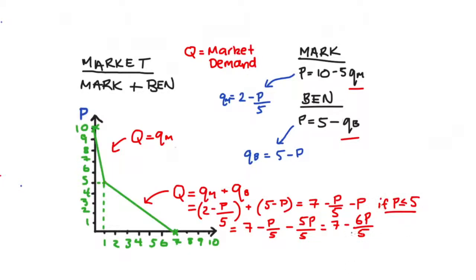For this top part, since market demand is just equal to Mark's demand curve, big Q equals Q subscript M and Q subscript M is 2 minus P on 5, then clearly big Q is just equal to 2 minus P on 5 but that's only if prices are greater than 5. And that's it, that's the algebra for our market demand.